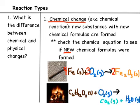Here's what you should have gotten after balancing: 4Fe + 3O₂ → 2Fe₂O₃. We can see that new products are formed — Fe₂O₃ is not seen on the reactant side. So this is a chemical change.